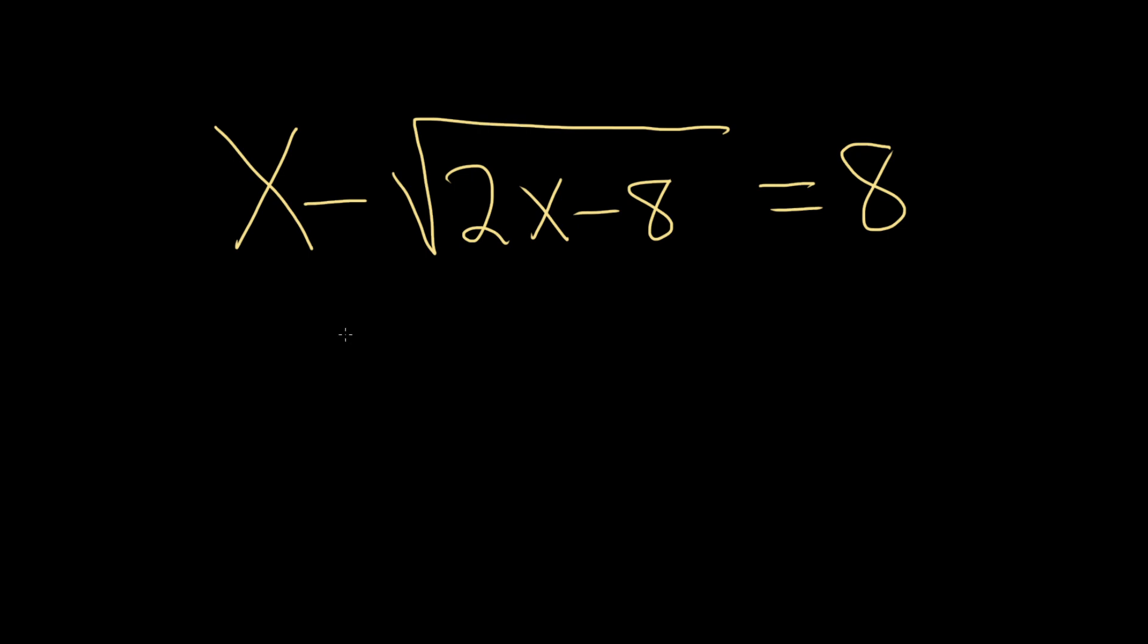So the first step to solve for x is to isolate the square root. Let's go ahead and start by subtracting this x from both sides. So minus x minus x, that's going to give us minus square root of 2x minus 8, and that's equal to 8 minus x.